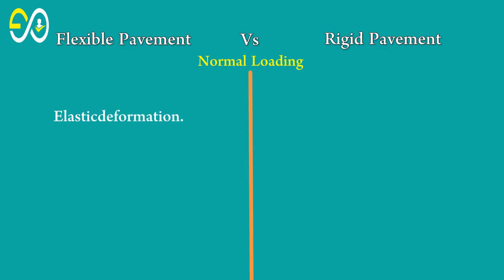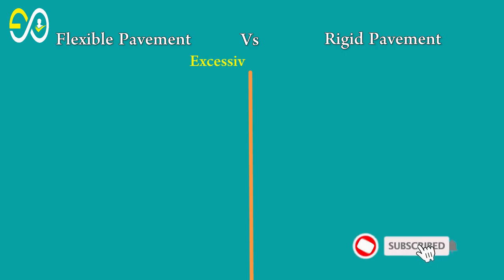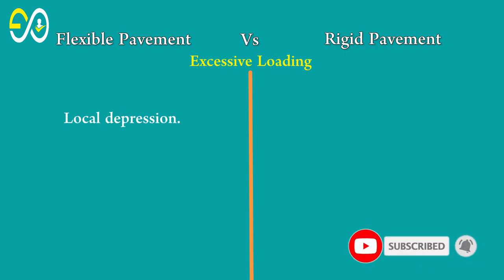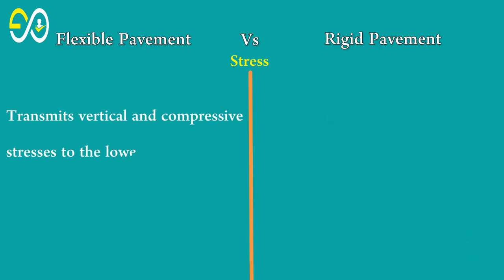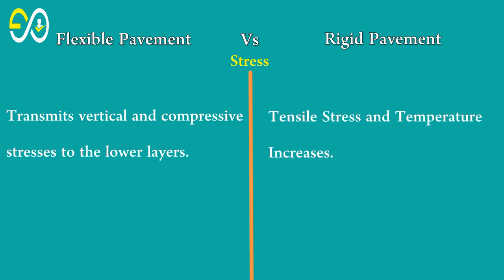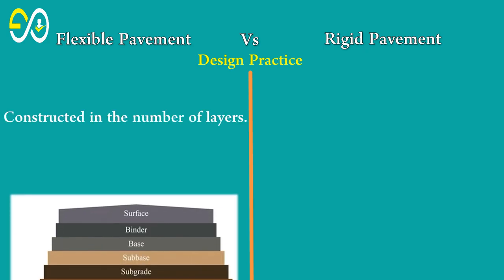Flexible pavement undergoes elastic deformation and acts as a beam or cantilever. Local depression causes cracks in rigid pavement. Flexible pavement transmits vertical and compressive stresses to the lower layers, while rigid pavement transmits tensile stress, and temperature stresses increase.